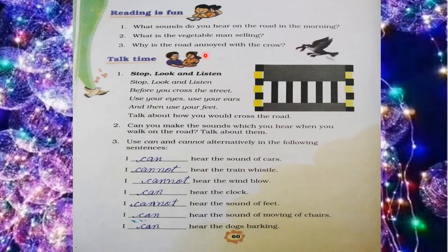These are the question answers that we'll do in our notebook. Now come to question number three. Use 'can' or 'cannot' alternatively in the following sentences. In this question, you have to use can or cannot and complete the sentences — if you can do something, write 'can,' and if you cannot, write 'cannot.'